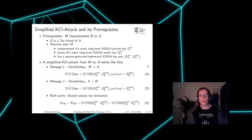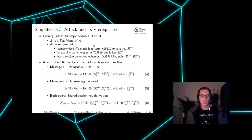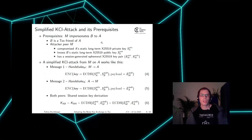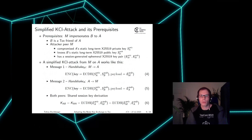I will now show how a simplified KCI attack works. To perform such a KCI attack, the attacker Mallory impersonates Bob to Alice. The prerequisites are: Bob must be a TOX friend of Alice; Mallory must have compromised Alice's static long-term private key; he must know Bob's static long-term public key, for example from his TOX ID; and he must generate an ephemeral X25519 key pair.